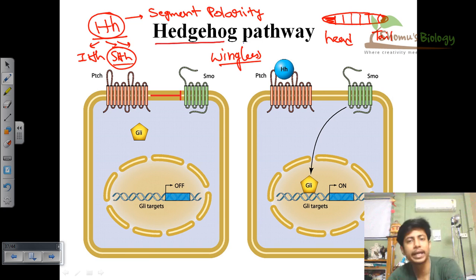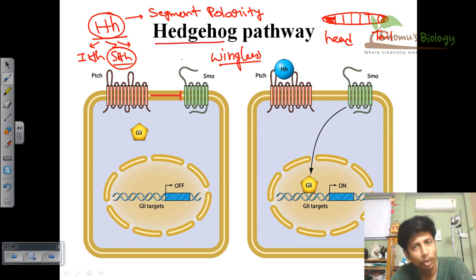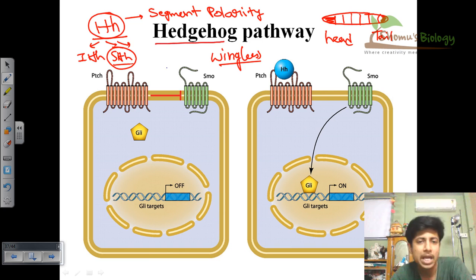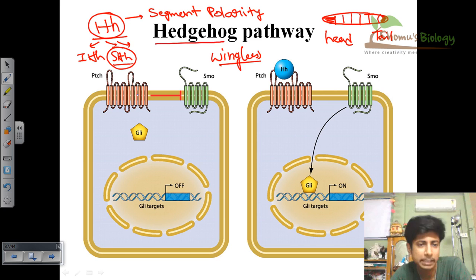The hedgehog pathway is a type of intercellular signaling pathway in which different cells cross-talk between themselves. It helps in the development of muscle, lungs, GI tract, brain, and so on, and this is also true in the case of mammals. The basic representation of this signaling involves two different proteins on the surface of a cell.